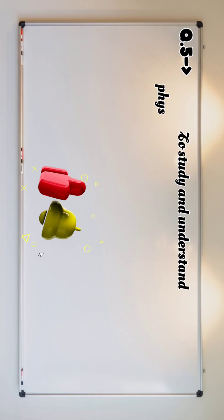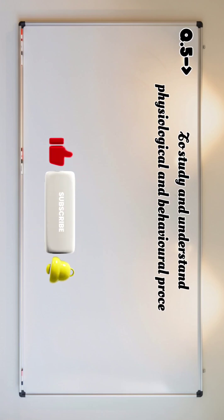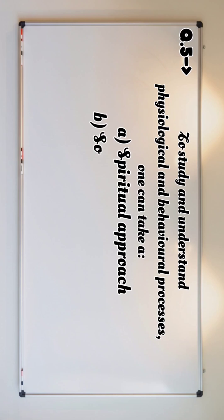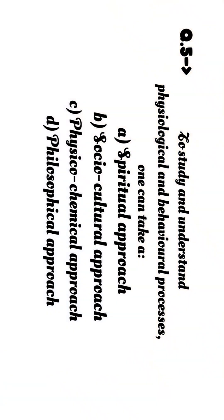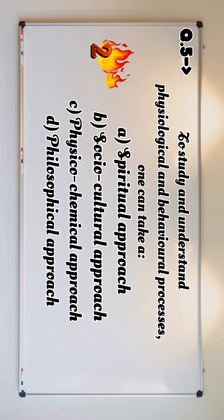Question number five: To study and understand physiological and behavioral processes, one can take: a) spiritual approach, b) social cultural approach, c) physical chemical approach, d) philosophical approach. Countdown begins in ten, nine, eight, seven, six, five, four, three, two, one.